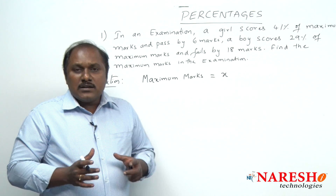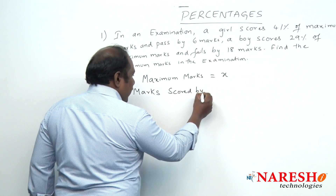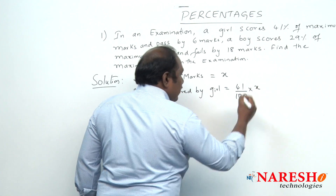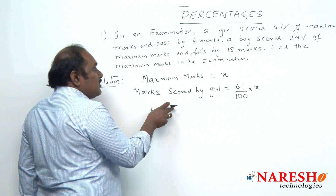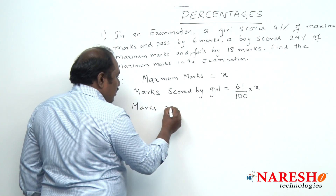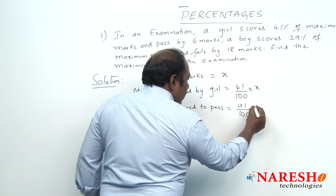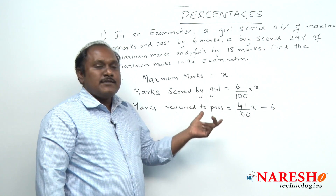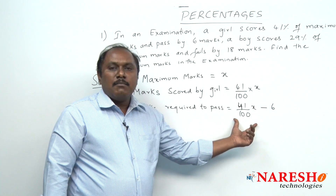Let the maximum marks in the examination be x. Then, marks scored by girl is 41% of maximum marks, which is 41/100 × x. But she passed by 6 marks, so marks required to pass will be 41x/100 − 6, because she scored 6 marks more than the marks required to pass.